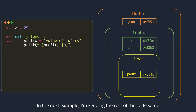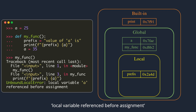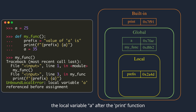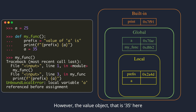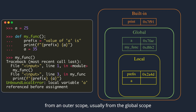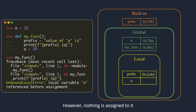In the next example, I'm keeping the rest of the code the same and trying to modify the global variable a from within the function. If you run this function, you get an exception stating 'local variable referenced before assignment.' Notice that the error is happening at our print statement. You may think that print should have used the global variable a since we are only creating the local variable a after the print call. But this is not the case. Python determines at compile time — that is when it sees the def statement — that the function my_func has a local variable a since you are assigning a value to it in the body of the function. However, the value object (35 here) is only created when the function is executed. A variable is only local if you assign it inside a function; if you only reference it, the variable should be available from an outer scope. So when the function is called and execution reaches the print statement, the local namespace already has an entry for a, but nothing is assigned to it — this entry masks the a in the global namespace.